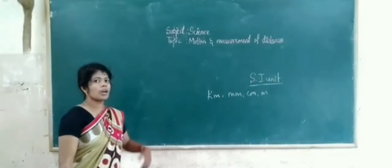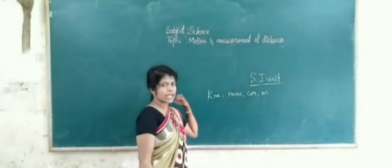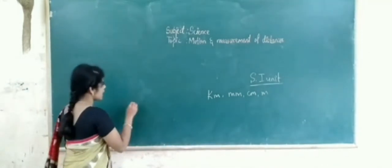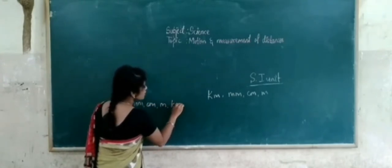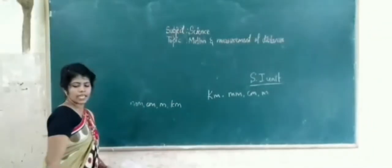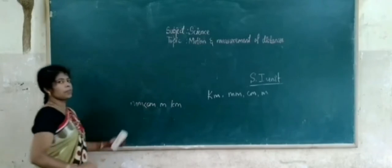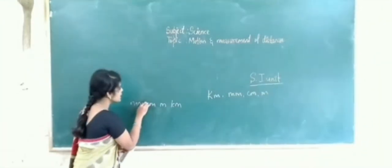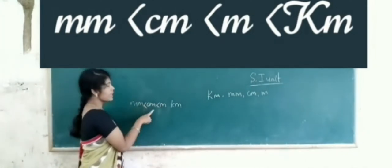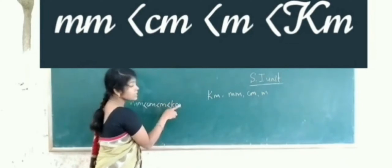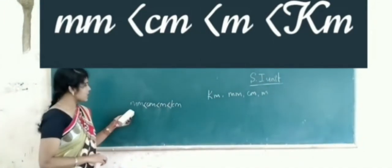Next, we saw five units. If anyone asks you to write them in ascending order, how would you write it? We write: millimeter, centimeter, meter, kilometer — that is the ascending order. Millimeter is smaller compared to centimeter, centimeter is greater than millimeter, and so on up to kilometer.